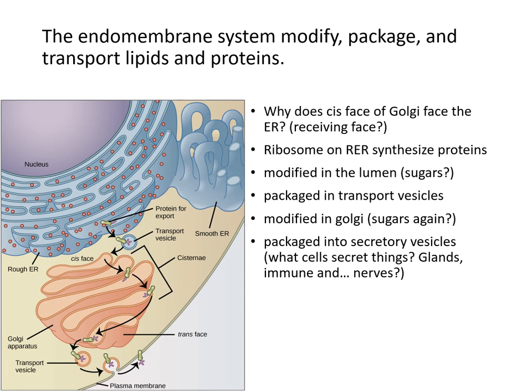The cis face of the Golgi apparatus faces the ER because that is where it receives vesicles carrying packaged proteins and lipids from both the rough ER and smooth ER. This directional orientation is essential for the endomembrane system's flow of modifying, packaging, and transporting lipids and proteins.